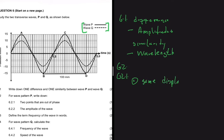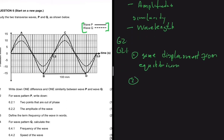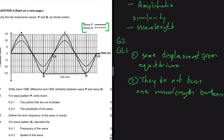Same displacement from equilibrium is the first condition. The second condition is that they do not have one wavelength between them, because if they did have one wavelength between them, those two points would be in phase instead.